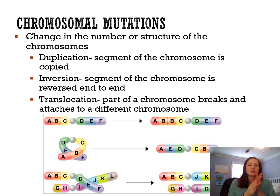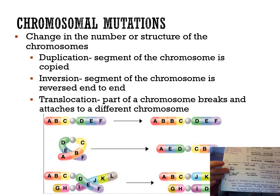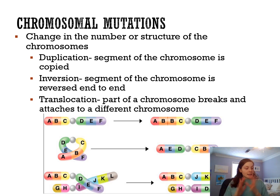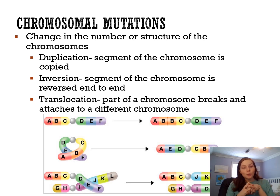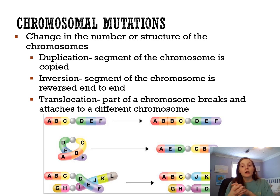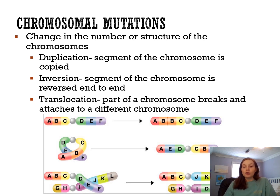The second type of mutations are chromosomal mutations — a change in the number or structure of chromosomes. Since chromosomes contain thousands of genes, these are usually not good. Chromosomal mutations tend to cause genetic disorders, or the baby may not develop properly, leading to miscarriages. Mutating whole chromosomes means potentially mutating thousands of genes.